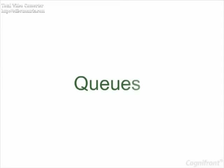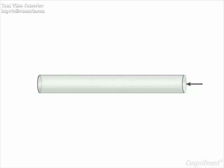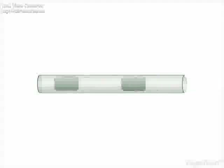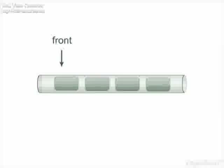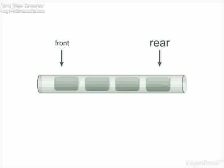Hi friends, let's understand queues. A queue is a data structure in which data elements are added from one end and removed from the other end. The position of the first element of the queue is known as the front of the queue, and the position of the last element is known as the rear of the queue.